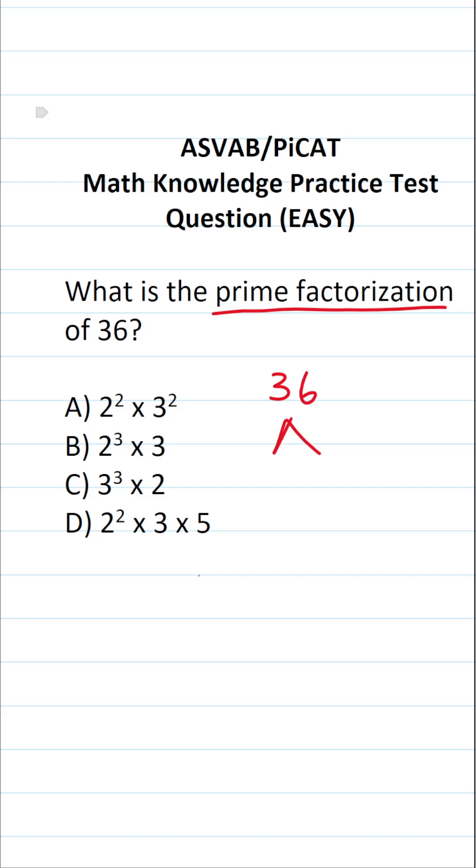What are some common prime numbers that you should know? Well, some common prime numbers are 2, 3, 5, 7, 11, and so on and so forth.